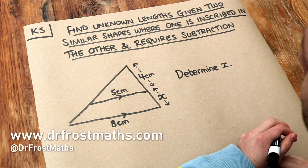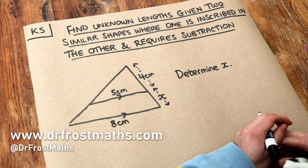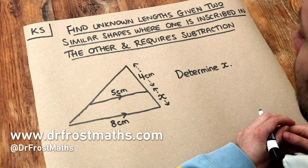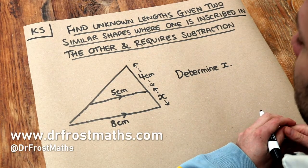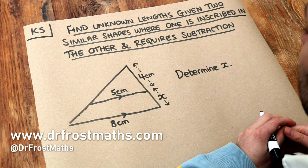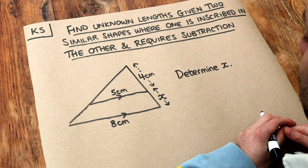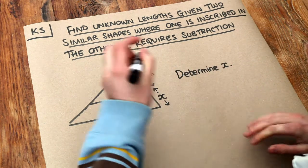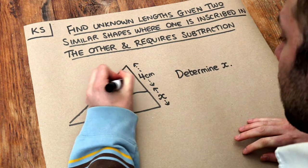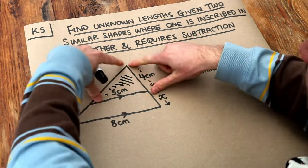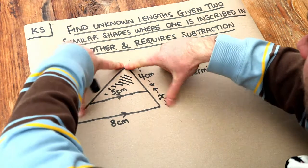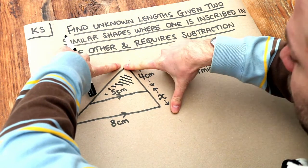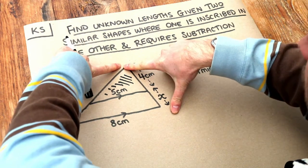Hello and welcome to this Dr Ross Maths key skill video on finding unknown lengths given two similar shapes where one is inscribed in the other and requires subtraction. What I mean by one triangle inscribed in the other is that this smaller triangle here is inside this larger triangle here.